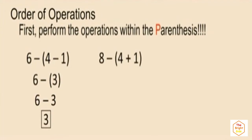Let's look at this one: eight subtract four plus one. Notice the sum of four and one is in parentheses, so we simplify that first — that's five. Since we're subtracting a positive five, we don't require the parentheses. Eight subtract five is three.